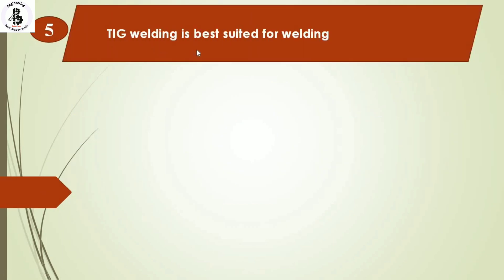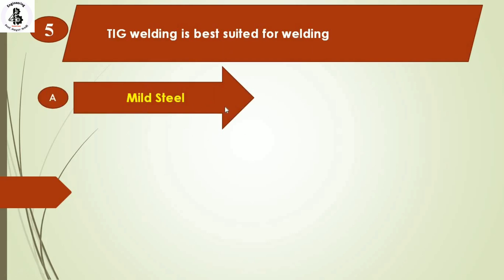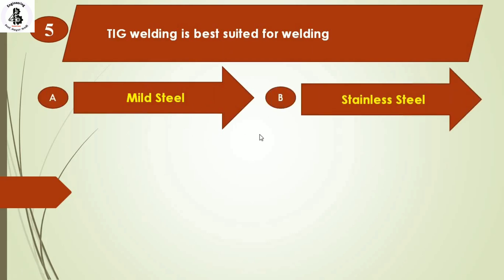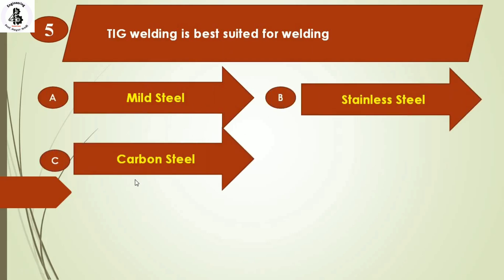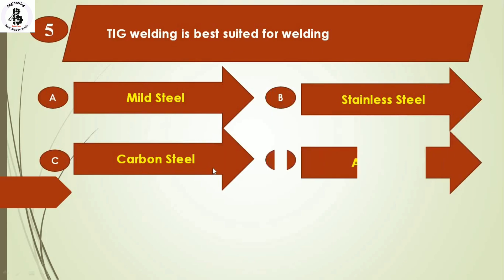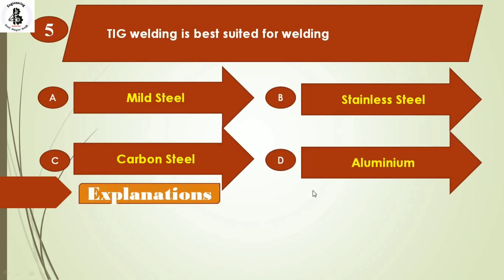TIG welding is best suited for welding: Option A: mild steel. Option B: stainless steel. Option C: carbon steel. Option D: aluminum. TIG welding is best suited for aluminum welding. So the answer is option D.